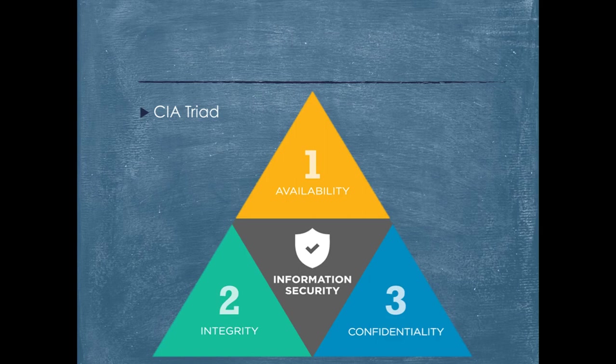The model is also sometimes referred to as the AIC triad, standing for availability, integrity, and confidentiality. This naming is used in order to avoid any confusion with the Central Intelligence Agency, as these are two different things. The elements of the triad are considered the three most crucial components of information security.